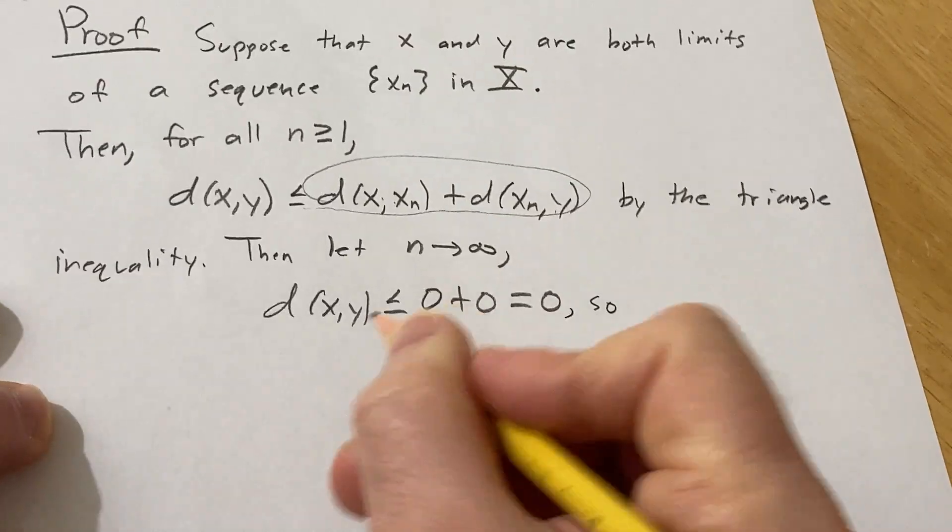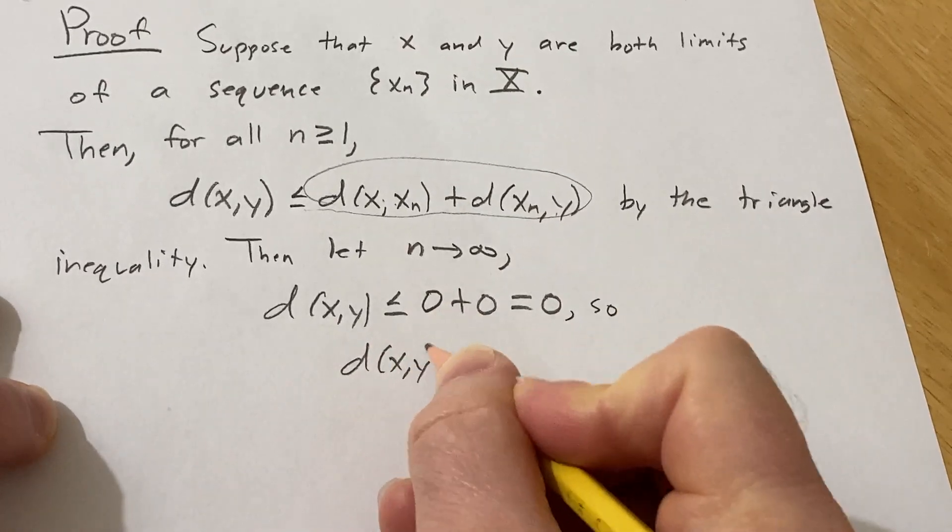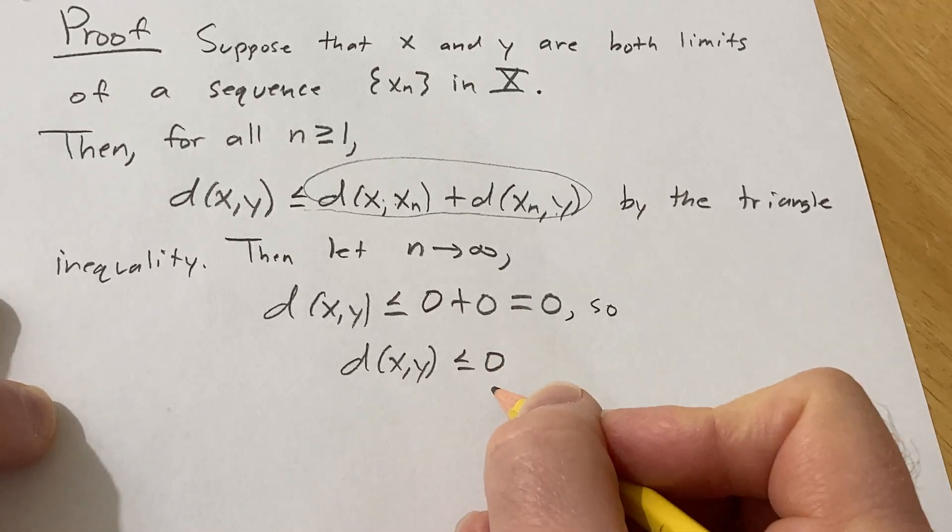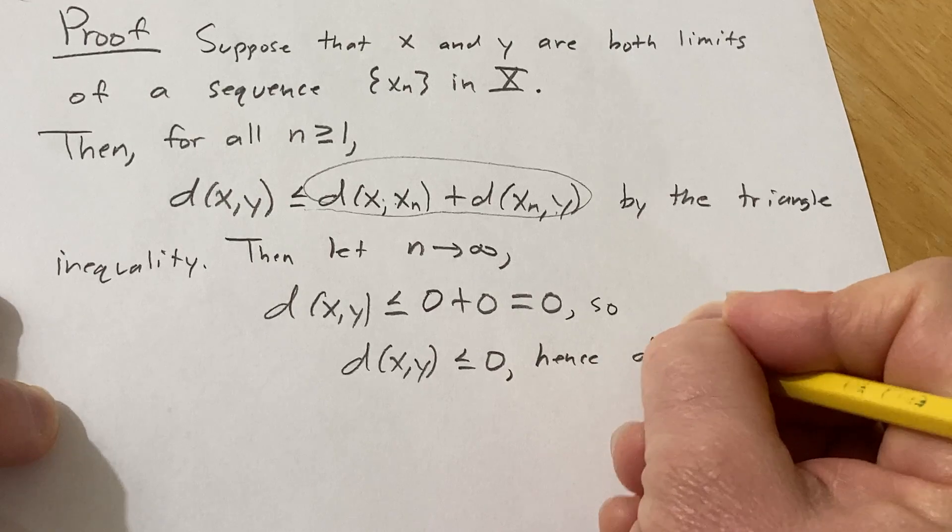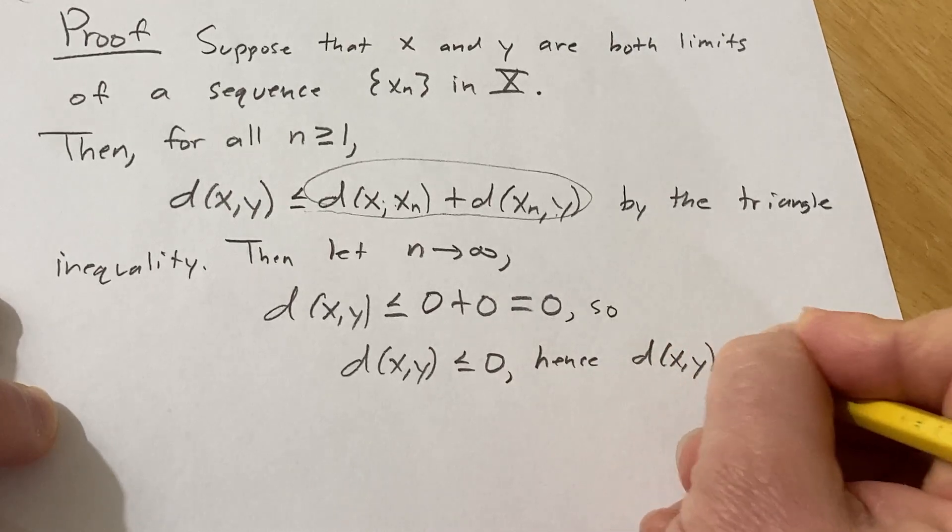So that means that we have the distance between x and y less than or equal to zero. Well it can't be less than zero, so it must be equal to zero. Hence, the distance between x and y is equal to zero.